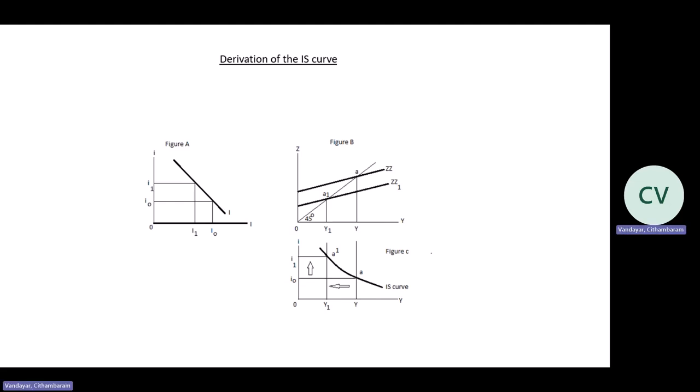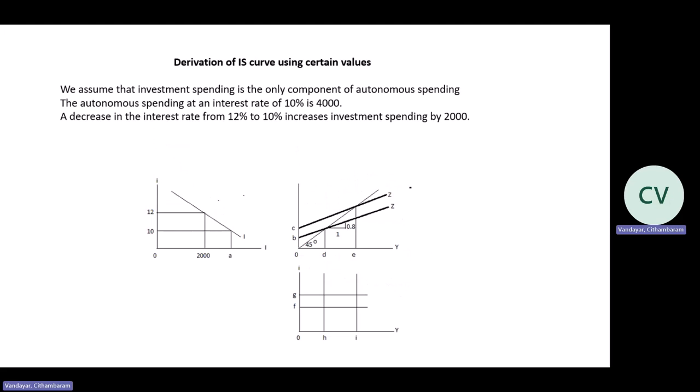What I'm now going to do is look at a numerical example in the derivation of the IS curve. We assume that investment spending is the only component of autonomous spending — there could be others like government spending, consumption spending, and export spending. The autonomous spending at an interest rate of 10% is 4,000 rands. A decrease in the interest rate from 12% to 10% increases investment spending by 2,000. The information given is very important — we need to understand and use this information to answer the questions that follow.